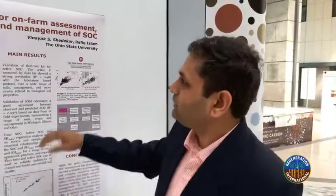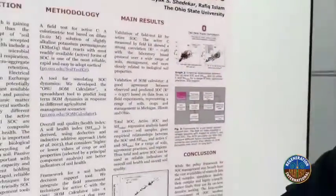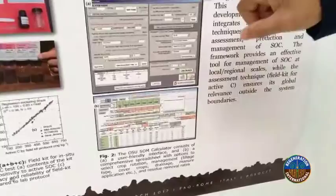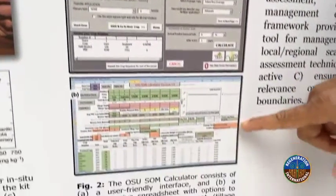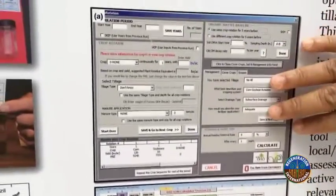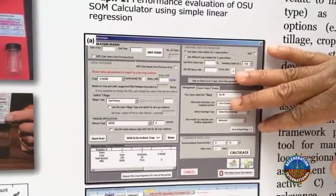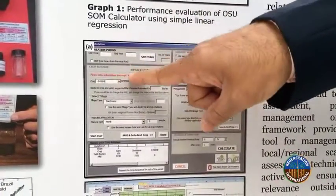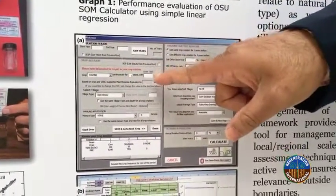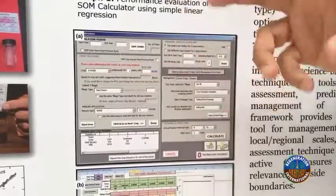Once you've established what the carbon level and soil quality are, a farmer would want to know: if I do certain things in the future, how is soil quality going to look in the next 5, 10, 15, or 50 years? That's where the prediction factor comes in. This is called the Ohio State University Soil Organic Matter Calculator — a spreadsheet-based tool with an interface that acts as an expert to farmers, taking them through step-by-step questions about crop rotation, crop yields, tillage type, and so on.